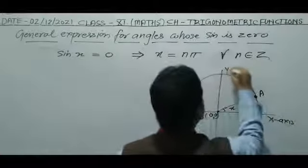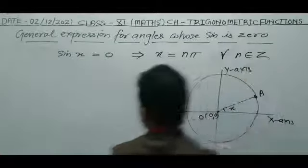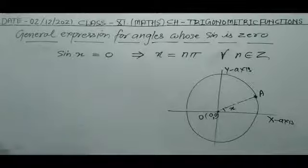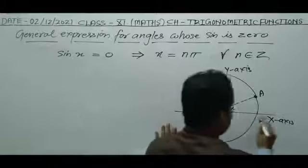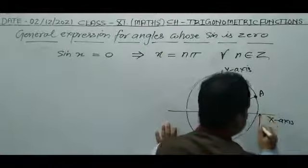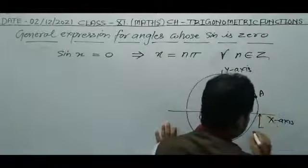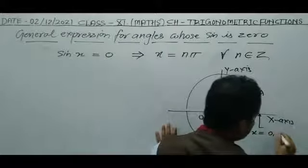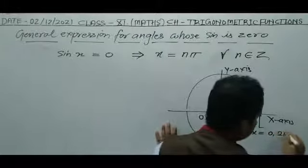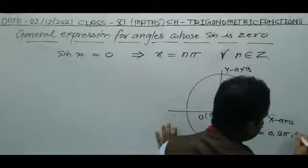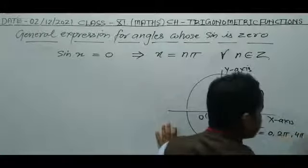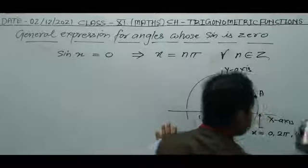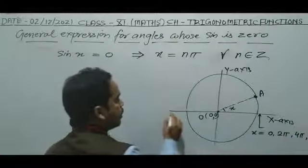Consider the x-axis and y-axis. On the positive x-axis, sin x equals zero when x is equal to 0, 2π, 4π, 6π, and so on.